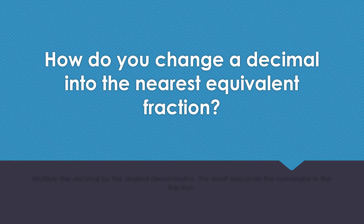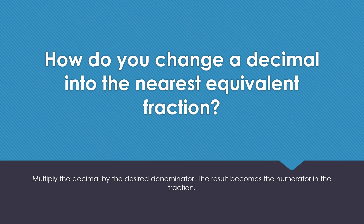How do you change a decimal into the nearest equivalent fraction? Multiply the decimal by your desired denominator. The result will become the numerator in the fraction.